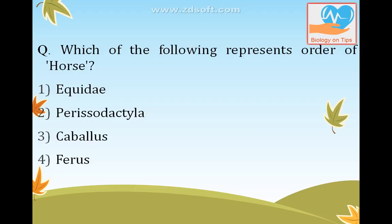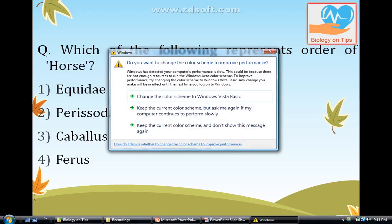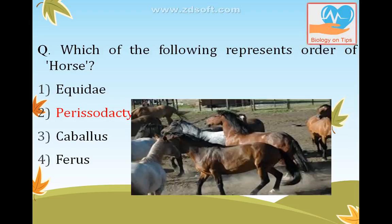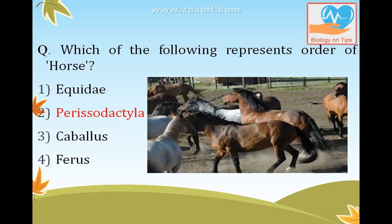Which of the following represents the order of horse? The answer is Perissodactyla. These are the orders of the class Mammalia.